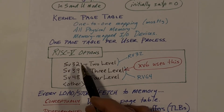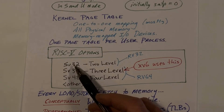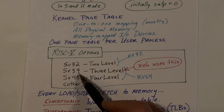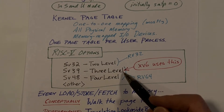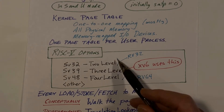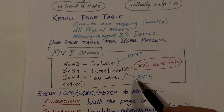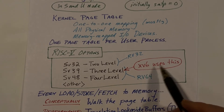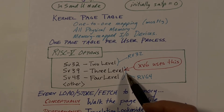With RISC-V there are a number of options for how page tables are implemented, called SV-32, SV-39, and SV-48. SV-32 is a two-level scheme available for 32-bit processors. SV-39 is the three-level architecture, and SV-48 is four-level. We are only concerned with a 64-bit processor, and XV-6 uses the SV-39 scheme, so we have three-level page tables.